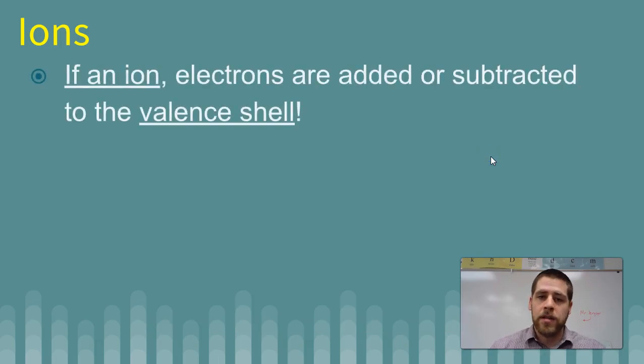Now, if you're talking about ions, you have to add or subtract electrons to the valence shell, the valence being the highest energy level, the most outside energy level. If it's going to be a positive ion, a cation, then we're going to subtract electrons, because that means it has fewer electrons if it's positive. If it's a negative ion, then we're going to be adding more electrons, because it's more negative.